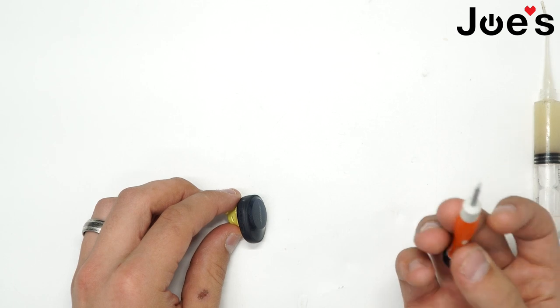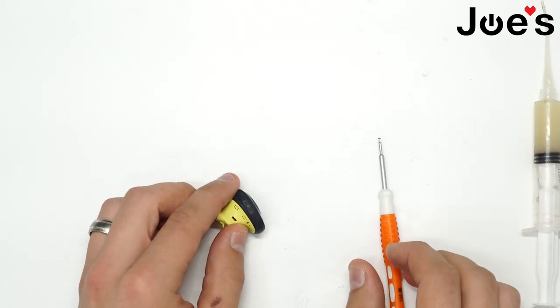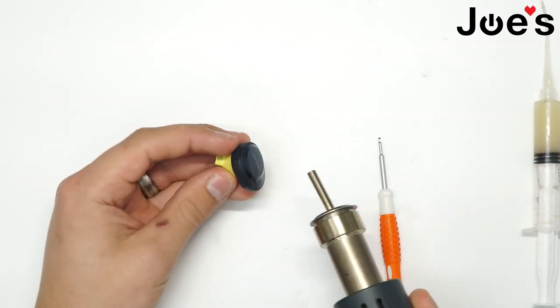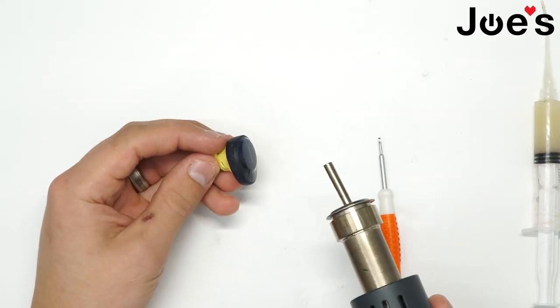Grab a flat-headed screwdriver. Go ahead and get your heat gun. I usually set it up about 200 degrees Celsius.